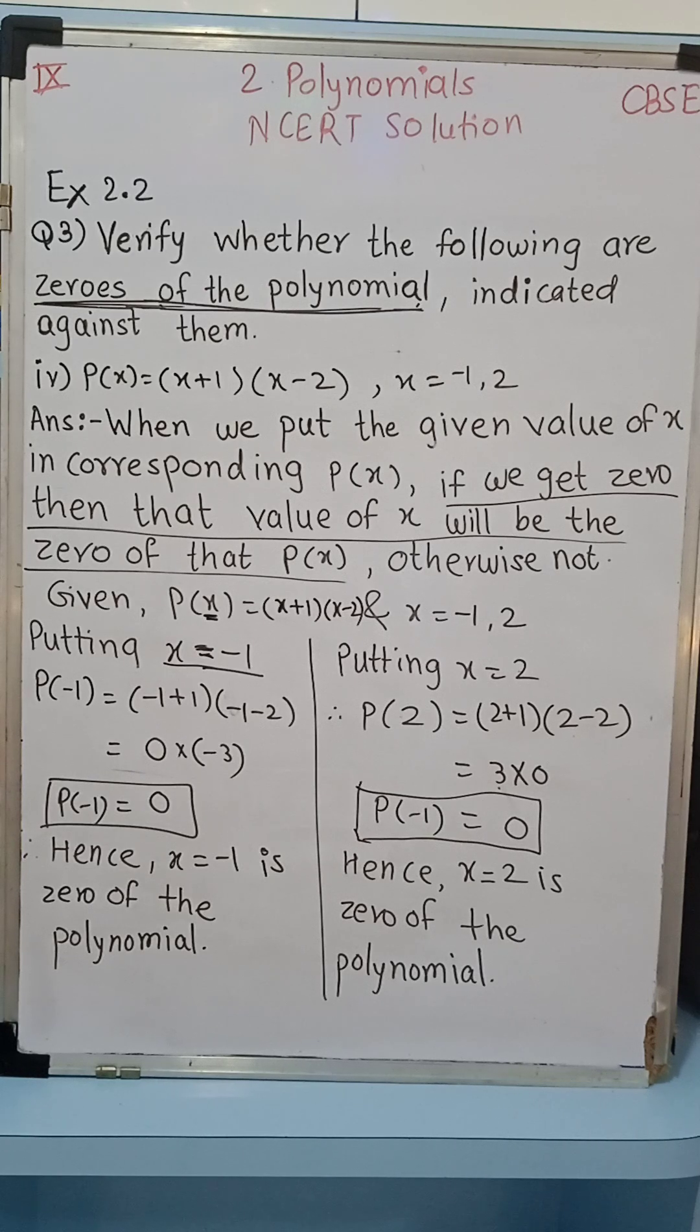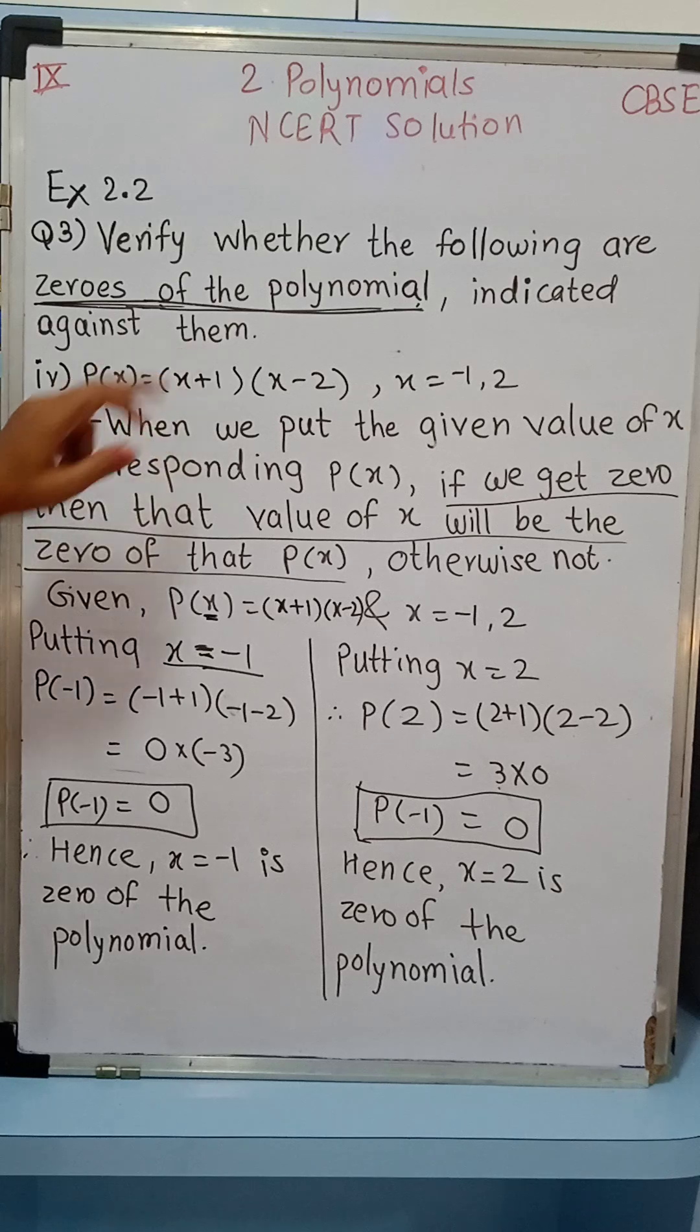We are solving exercise 2.2, the previous questions are already there. Here the question is to verify whether the following are zeros of the polynomial indicated against them.